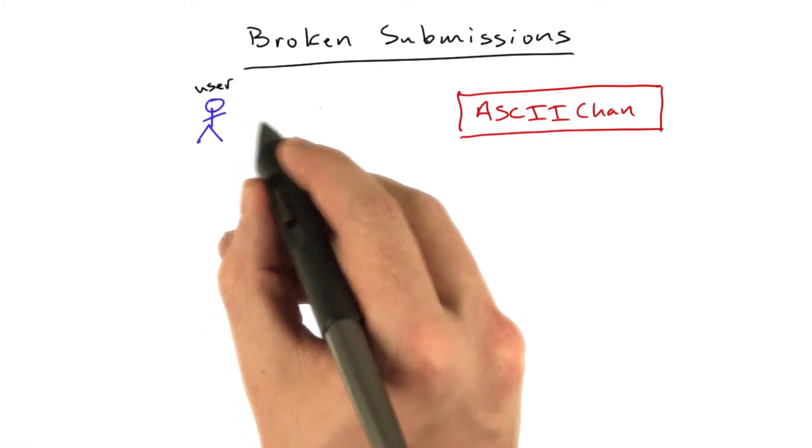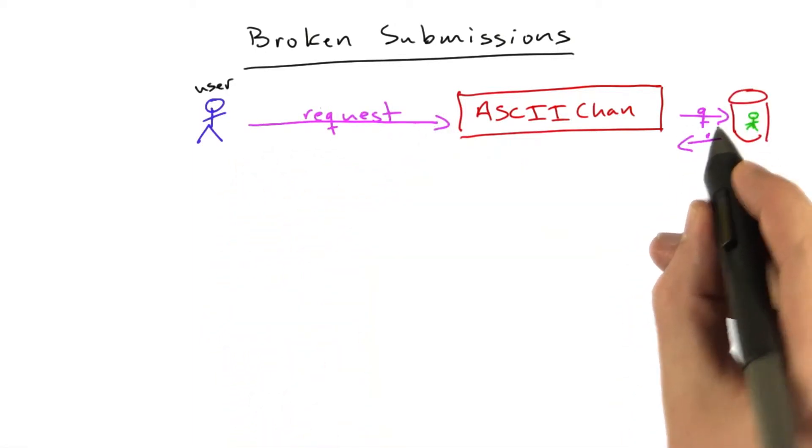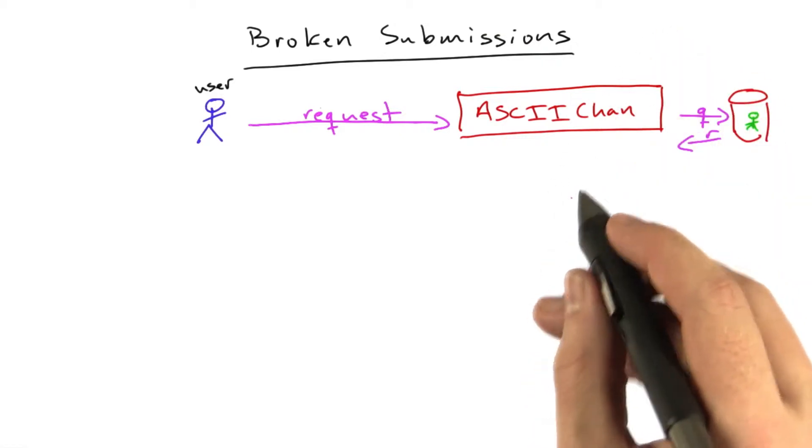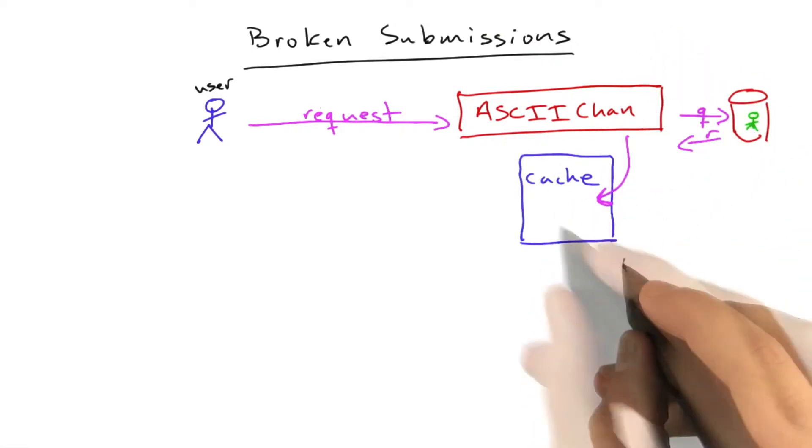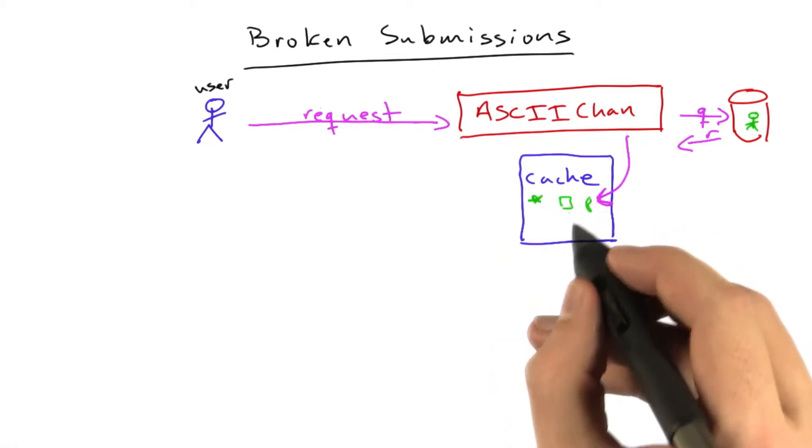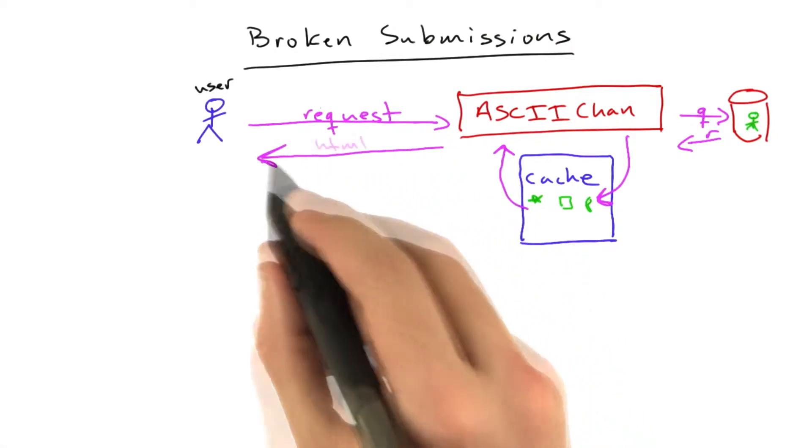What we did is we made a request to ASCII Chan, who made a query to the database, which came back with a response, and then ASCII Chan stored that result of that query in a cache. So now we've got all of our artwork in our cache, and we use the data in that cache to send the result back to the user.